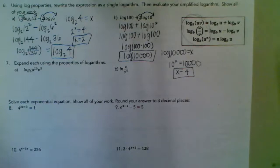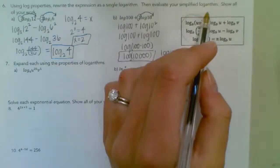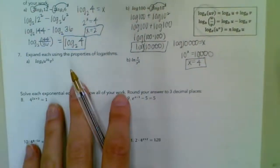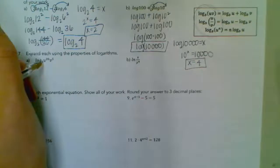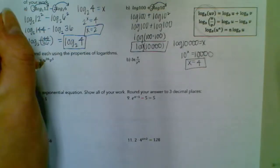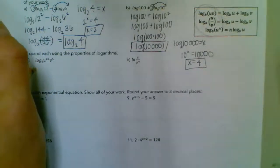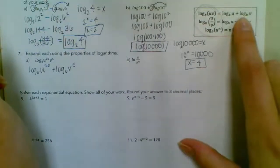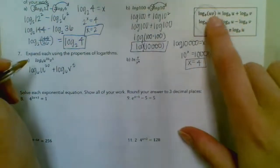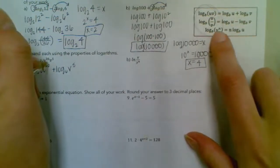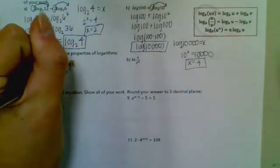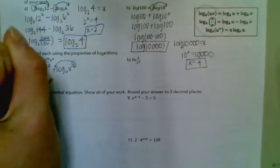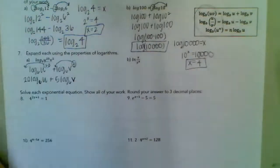Number 7: expand each using the properties of logs. Expanding means we want something that looks like the expanded side — we'll have plus, minus, or exponents moving in front of the log. Here, u and v are being multiplied, so we separate it using addition. This becomes log base 6 of u to the 20th plus log base 6 of v to the 5th. Now we use the power rule and move the exponents out in front: 20 log base 6 of u plus 5 log base 6 of v. Notice I rewrote the bases — you've got to keep the bases the same.